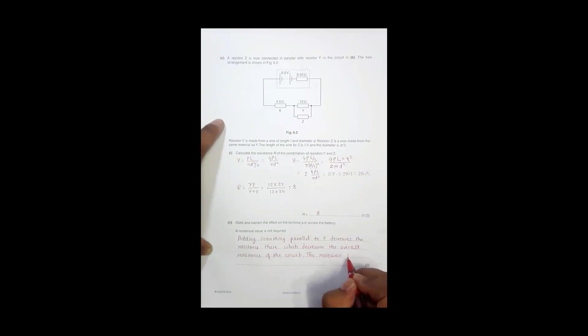And so Vt decreases because the terminal PD is equal to E minus I into r. So total PD should decrease because we have the expression Vt equal to E minus I into r. R is constant and this is also constant for the circuit.